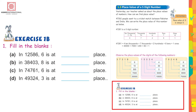Fill in the blanks. In twelve thousand five hundred and eighty-six, 6 is at the ones place because it is at the right-most side. In thirty-eight thousand four hundred and three, the value of 8 is eight thousand — it is at the thousands place. In seventy-four thousand seven hundred and sixty-one, 6 is at the tens place — the second place from the right side. Good, you can do it yourself now.